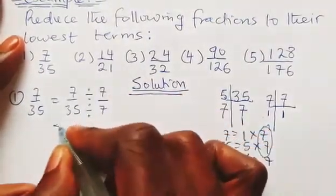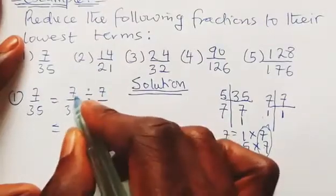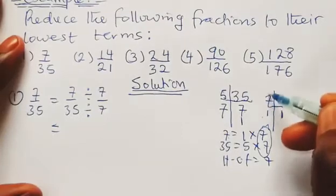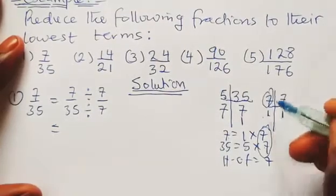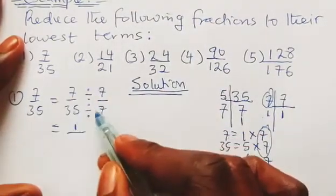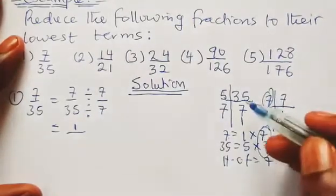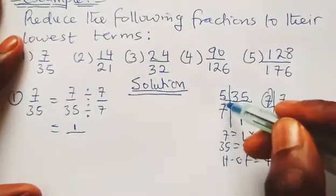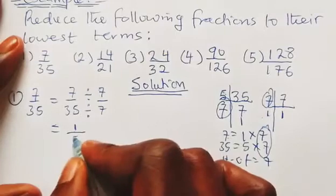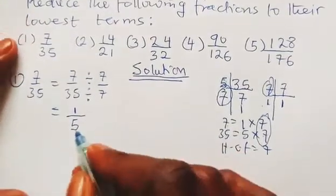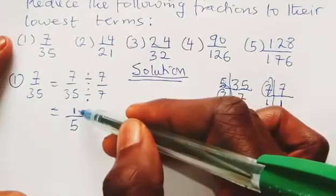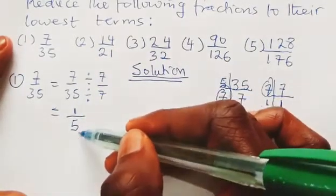We take the HCF of 7 and use it to divide both the numerator and denominator. 7 divided by 7 gives us 1, and 35 divided by 7 gives us 5. So we arrive at the simplest form, which is 1 upon 5. There is no other number that can divide both 1 and 5.